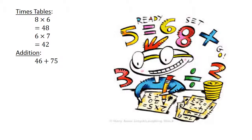Addition. 46 plus 75 equals 121. Subtraction. 24 minus 25 equals negative 1. Division. 72 divided by 8 equals 9.